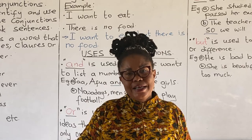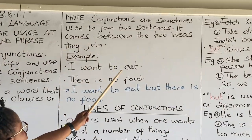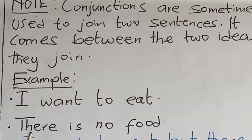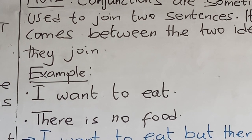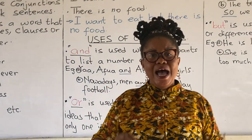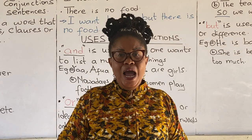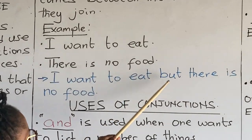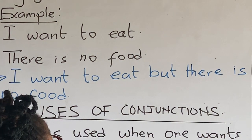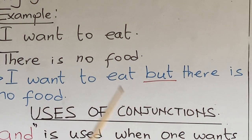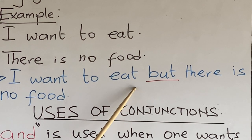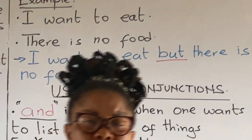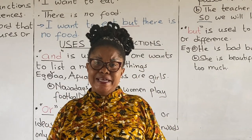Let's look at these two sentences on the board. The first one: I want to eat. The second one: there is no food. We want to put these two sentences together by using a conjunction. Which conjunction can we use? I want to eat, but there is no food. We use 'but' to join the two sentences together.